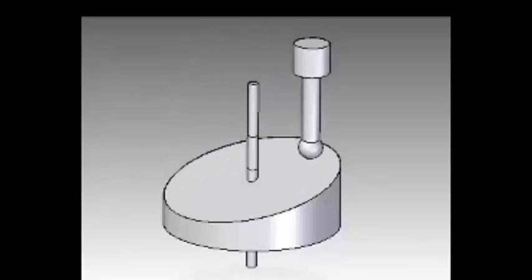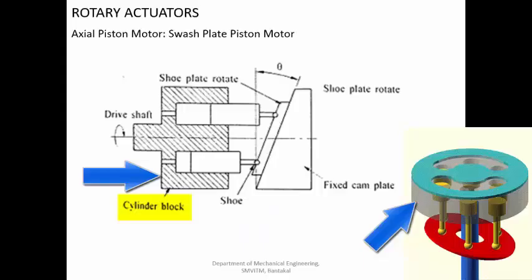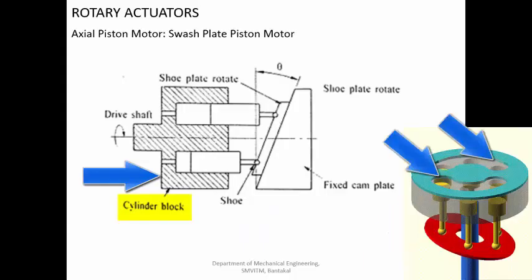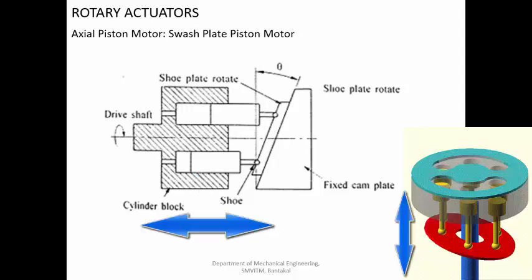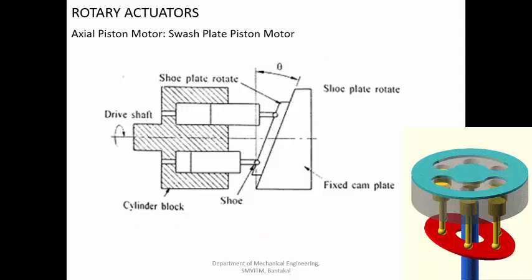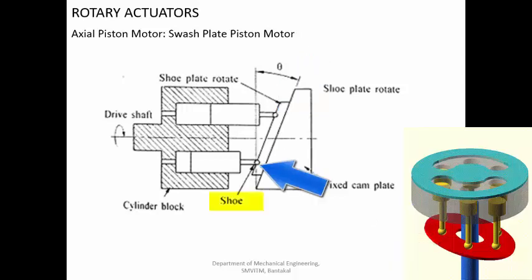So how does the piston rotate? You are having a cylinder block here. The cylinder block will have multiple holes — maybe 9, 7, or 11 holes. In each of these holes you will have a piston which can reciprocate up and down. Now the end of the piston rod is pressed against an inclined surface, and you are having a piston shoe here in order to reduce the friction. This entire cylinder block can rotate.